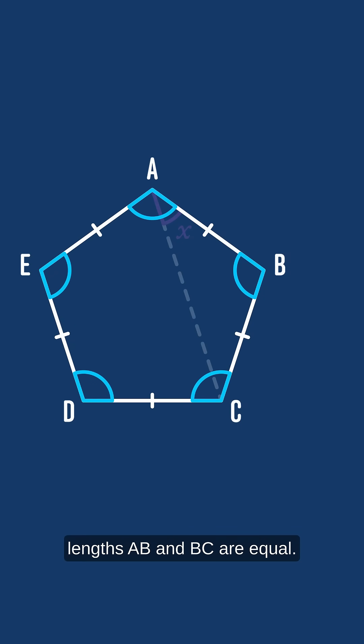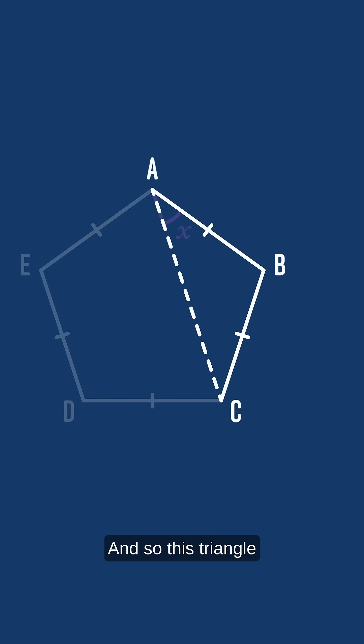In particular the side lengths AB and BC are equal and so this triangle ABC is isosceles. And the apex angle of that triangle, angle ABC, is one of the pentagon's interior angles.